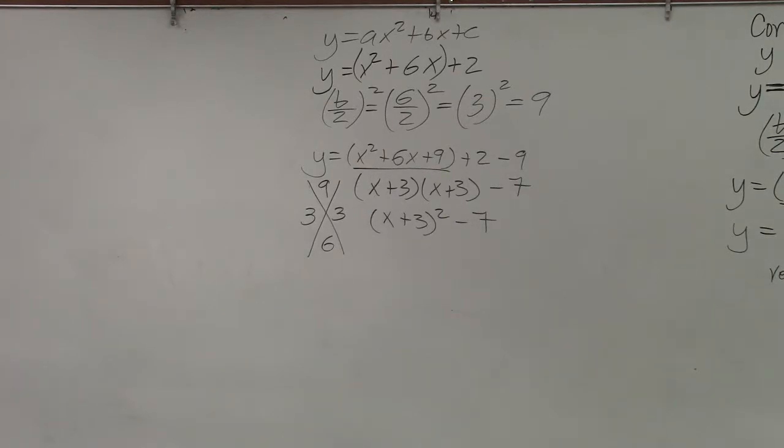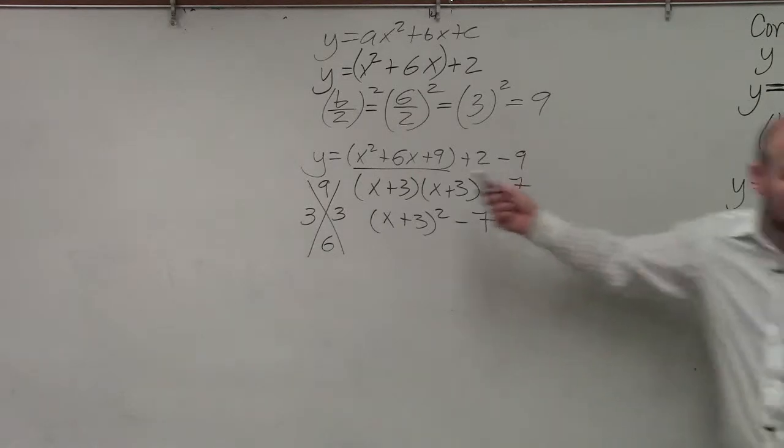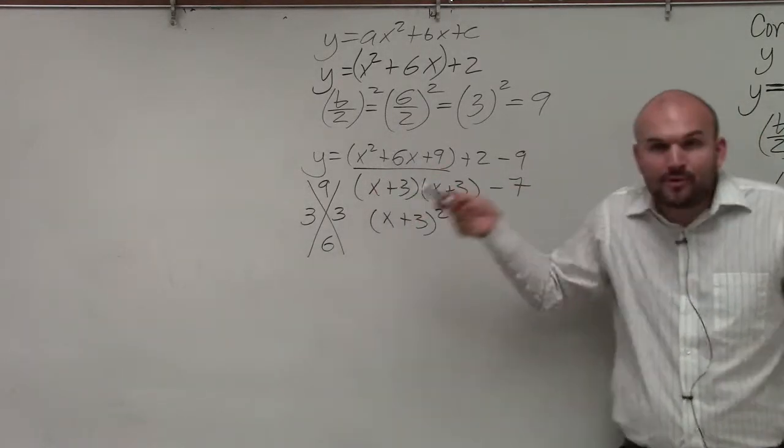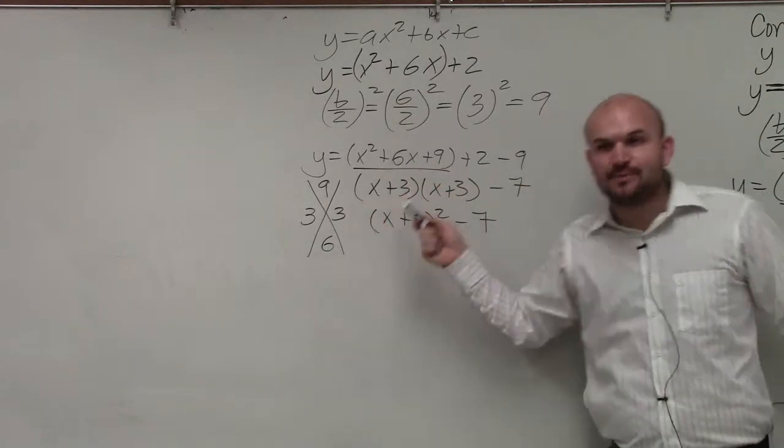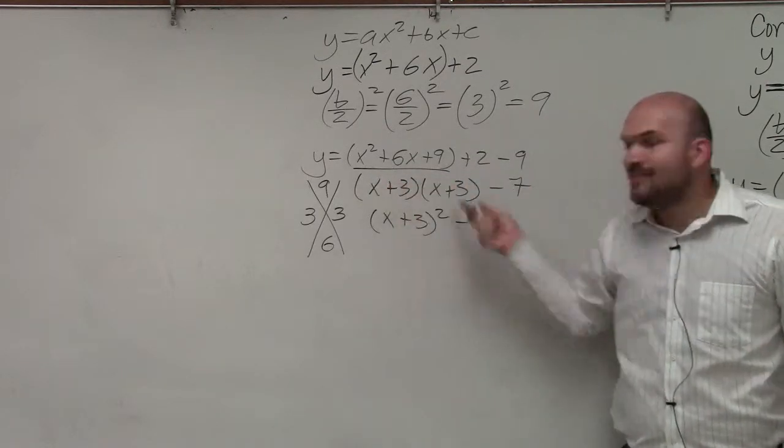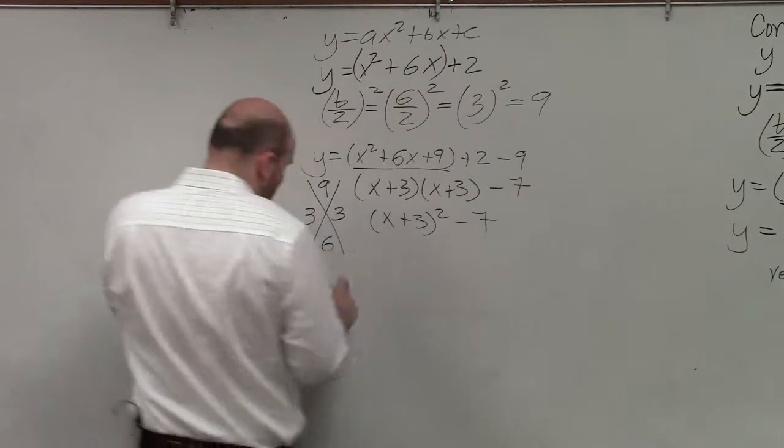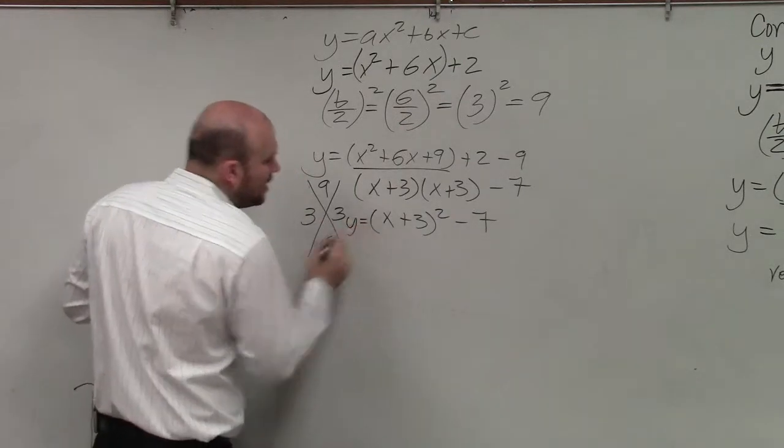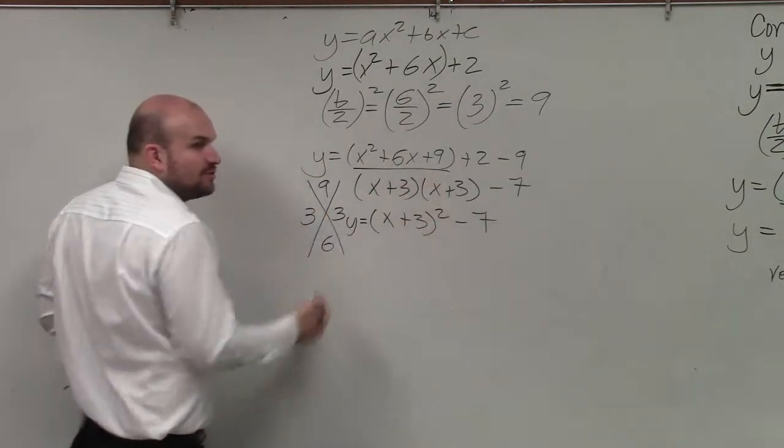All you basically do is, just like we did at the beginning of class period, you're going to factor. You created this. Remember, that's why the whole purpose of this is we want to create the perfect square trinomial. So we create the perfect square trinomial, then we factor it. Now we have this equation of y equals x plus 3 squared minus 7.